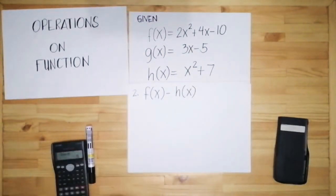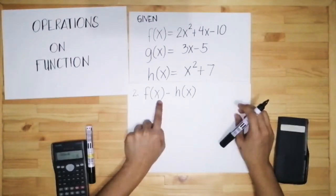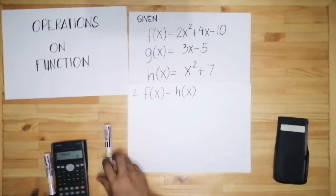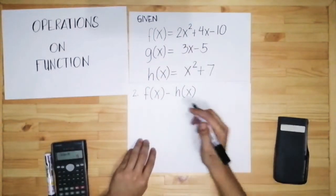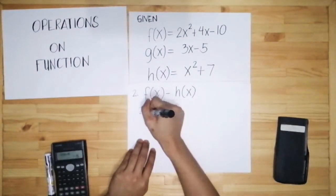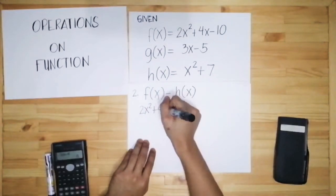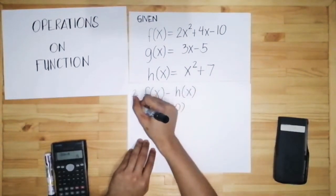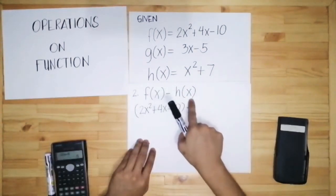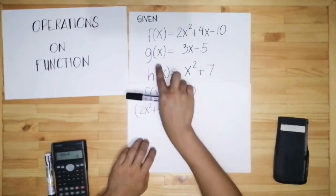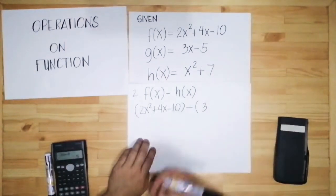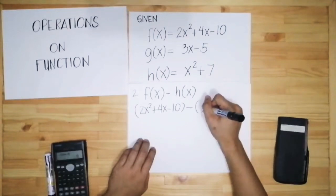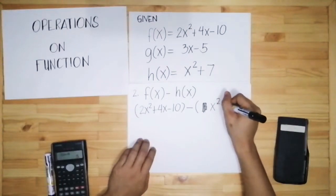Let's proceed now with subtraction. We have f of x minus h of x. Same process. f of x is 2x squared plus 4x minus 10 — copy that in parentheses — minus, then h of x is x squared plus 7. Note that g of x will not be utilized in this solution.